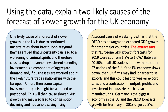The second cause of weaker growth is that the OECD has downgraded expected growth for other countries. Eurozone growth forecasts were cut from 1.8% to just 1%. Most of the UK's trade — the biggest slice — is done with nations inside the European Union, and if the EU economy slows down, UK firms may find it difficult to sell exports. That could lead to a contraction in output, profits, and investment in key export industries such as car manufacturing.